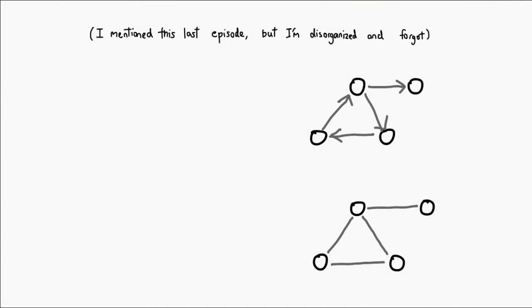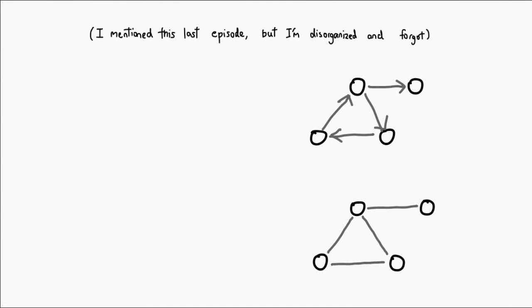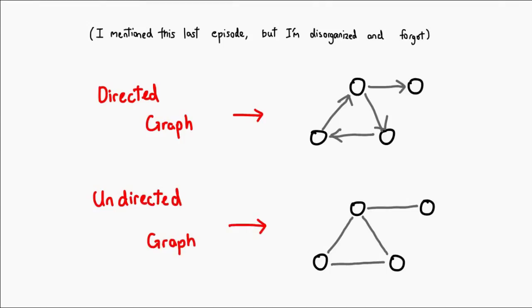Graphs can be directed or undirected. When we connect vertices with edges, we can say an edge only goes in one direction and not the other. So if we have a directed graph, instead of drawing just lines to connect vertices, we draw them as arrows. When performing computation, we know we can only go in the direction of the arrow and not backwards.